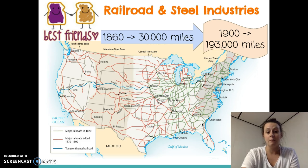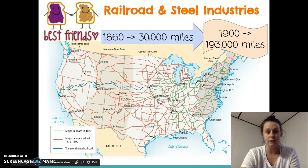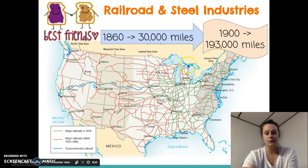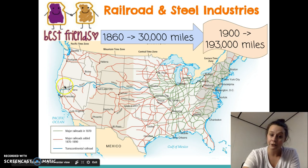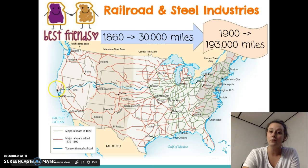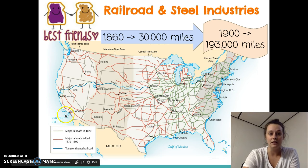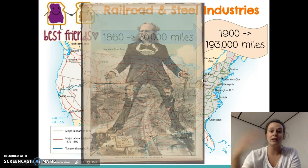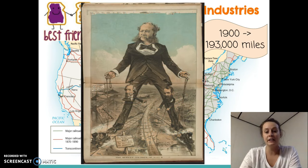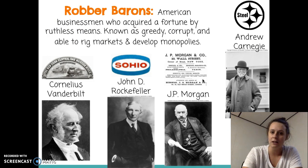Check out this map — you can really see the emergence of the railroad in such a short time period. In 1860 there were only 30,000 miles of railroad in the United States, and in 40 years that drastically increases. The transcontinental railroad — this blue line — really made a difference in the US economy because businesses were able to be linked from the East Coast all the way to the West Coast. The railroad tycoon, or robber baron, we're going to talk about is Cornelius Vanderbilt.